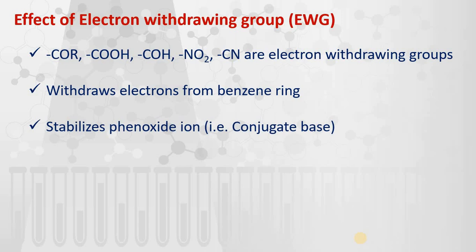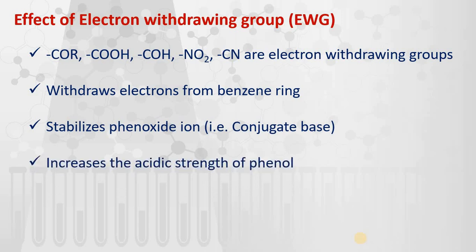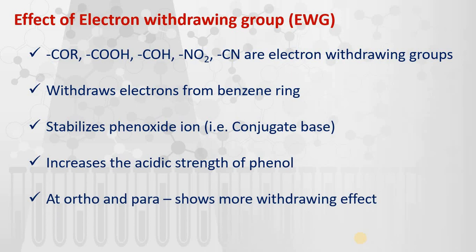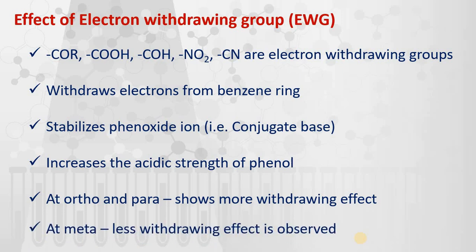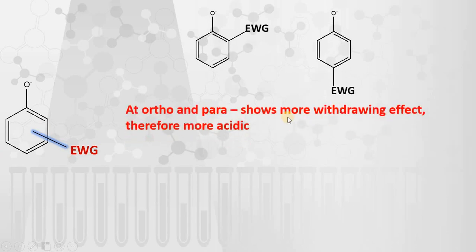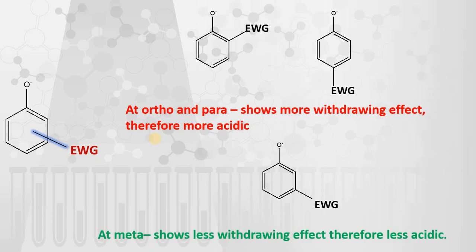Because EWGs withdraw electrons, the phenoxide ion (the conjugate base) is stabilized, which ultimately increases the acidic strength of phenols. At the ortho and para positions, the electron withdrawing effect is more pronounced, while at the meta position, less electron withdrawal is observed. Therefore, phenols with EWGs at ortho or para positions are more acidic than those with EWGs at the meta position.